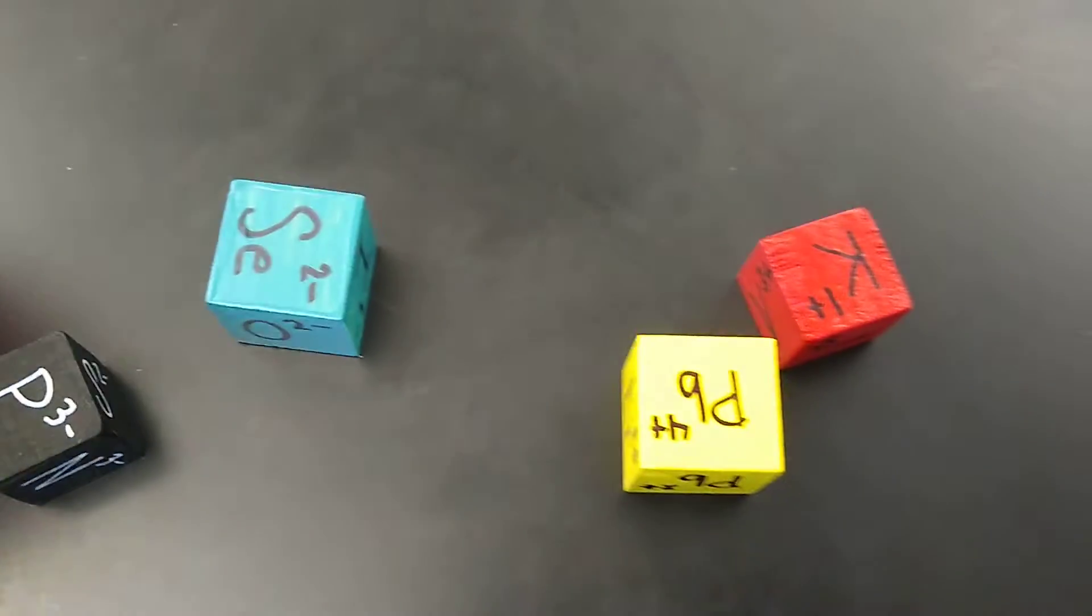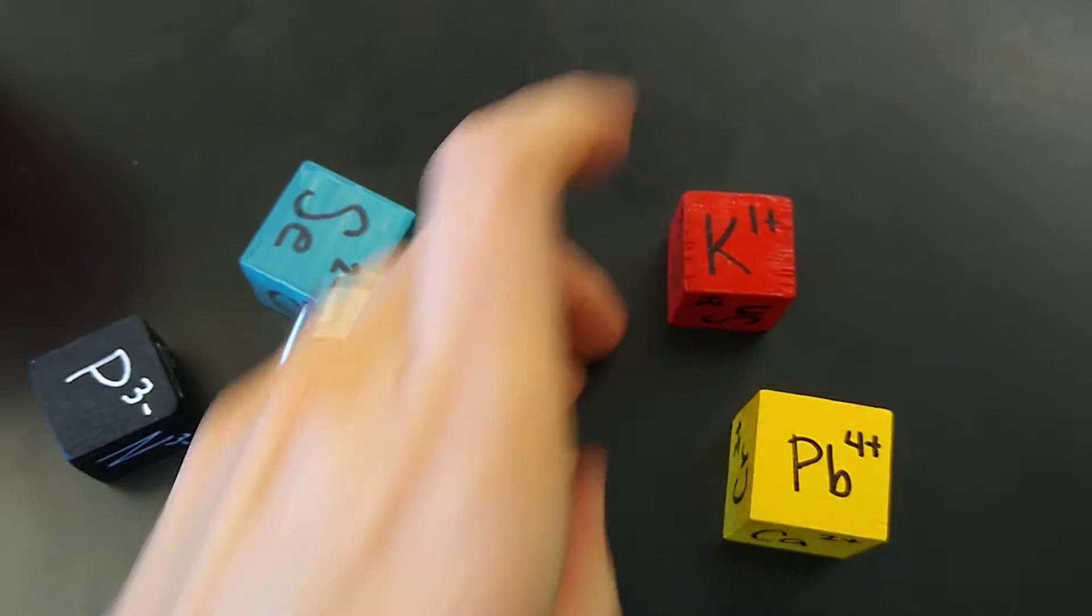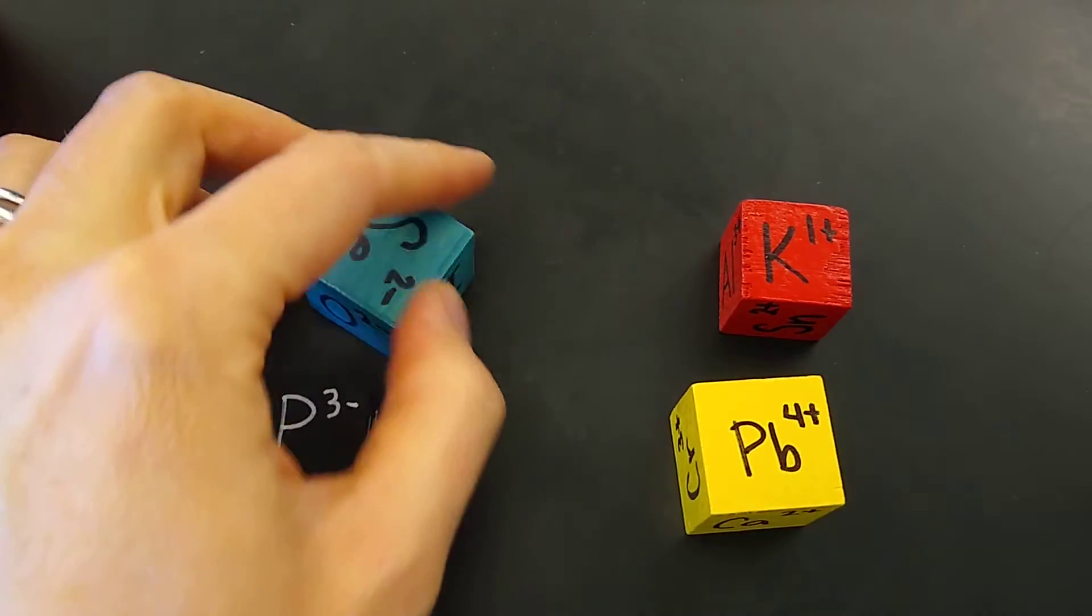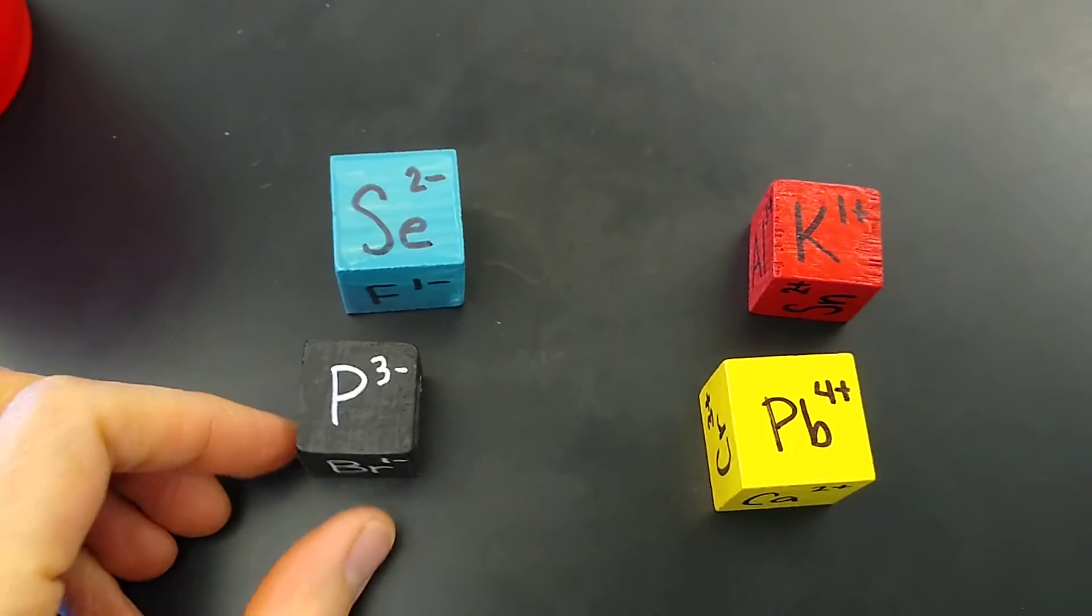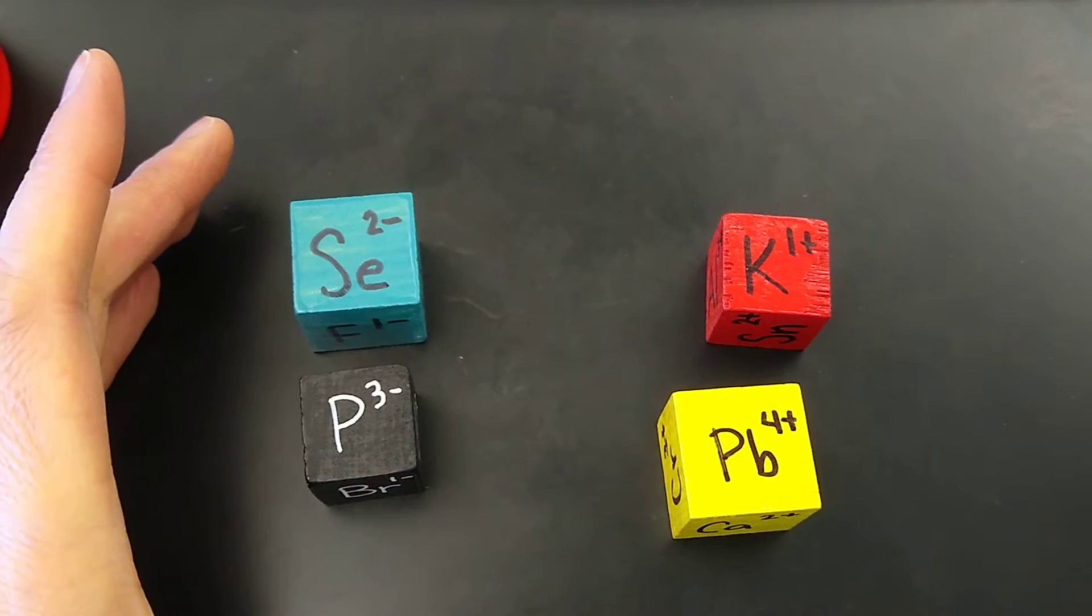So here we go, roll number one. I've got my positive ions over here. Remember those are your cations, so those go in the left column. You can put them together with either one of these negatives. Go ahead and pause the video if you need to as we go. Type those in and then I'm going to scoop them up and we're going to roll again. So that was roll one.